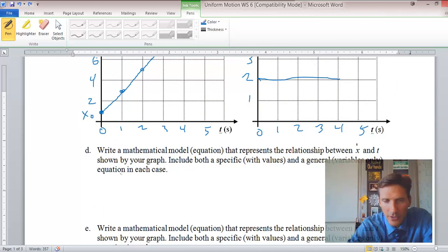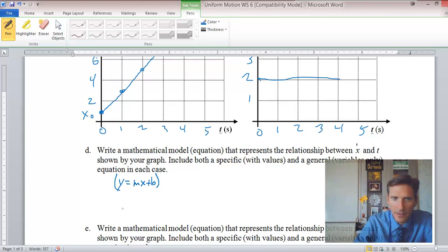But for us, what is on the Y axis? As we can see, it's actually X. And what is on the X axis? We can see that it's time. And B is the X intercept, X naught, what's right over here. And MX, M would be our slope. But we know that when we're looking at a position versus time graph, the slope is velocity. So we can call that V right here. We have just made what we would call the general variables only equation.